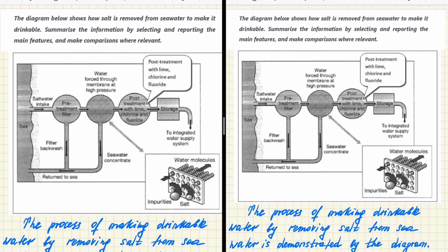So on the left hand side, we have a diagram and on the right hand side, we have an example answer on it. So let's read the task. The diagram below shows how salt is removed from sea water to make it drinkable. So summarize the information by selecting and reporting the main features and make comparisons where relevant. So as you can see in this diagram, we have sea and some process of its treatment step by step. And at the end, it says integrated water supply system. So water goes through treatment process and it goes to the water supply system.